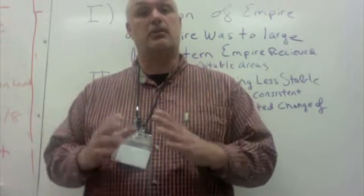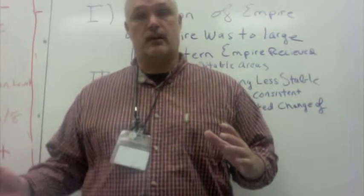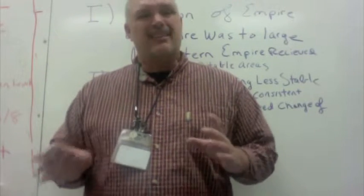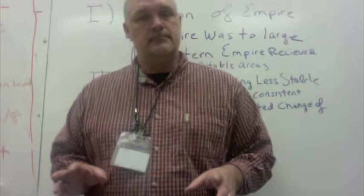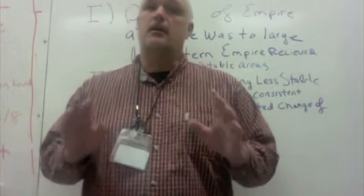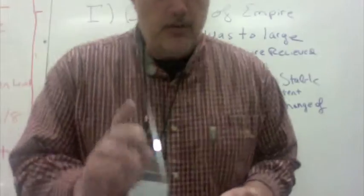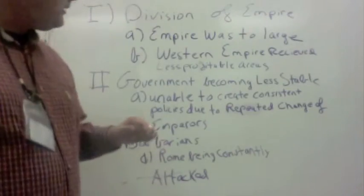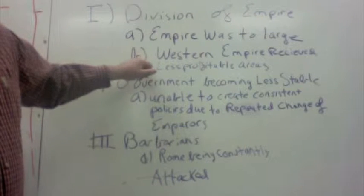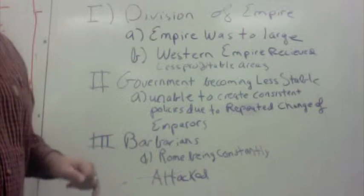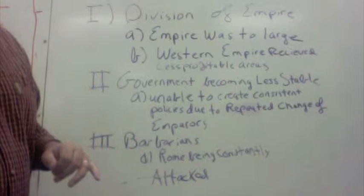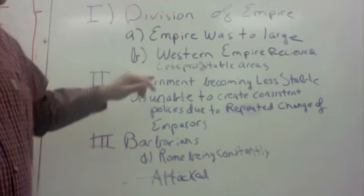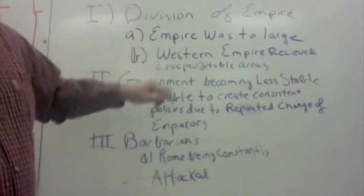So to monitor this entire Empire was extremely difficult, bureaucracy impossible to monitor. So what Rome decided to do was split it into Eastern and Western halves, which made it a little bit easier to run. Now this wouldn't have been such a bad idea, but if you recall the Western Empire received the largest... excuse me, the Eastern Empire received the largest benefits from the split, the Western Empire received the less profitable areas.